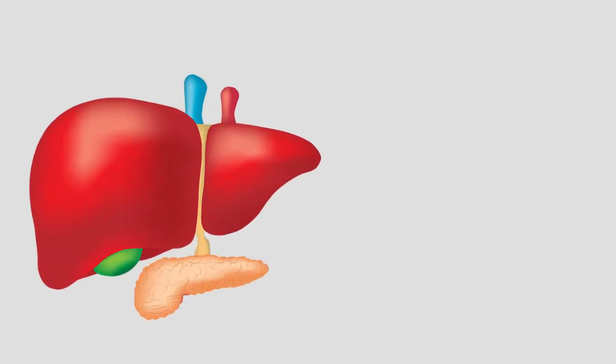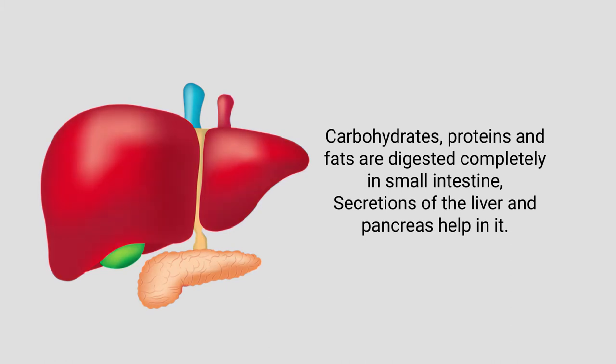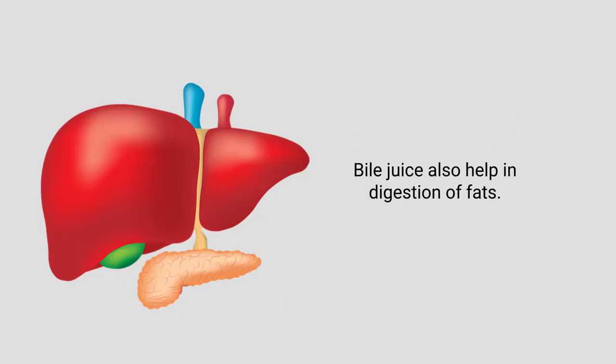Students may find that herbivores have a long small intestine whereas carnivores have a shorter one, because vegetables require more time for digestion compared to meat. In the small intestine, carbohydrates, proteins, and fats are all digested with the help of secretions from the liver and pancreas — two associated organs you need to introduce. The liver produces bile, which comes to the small intestine through the bile duct.